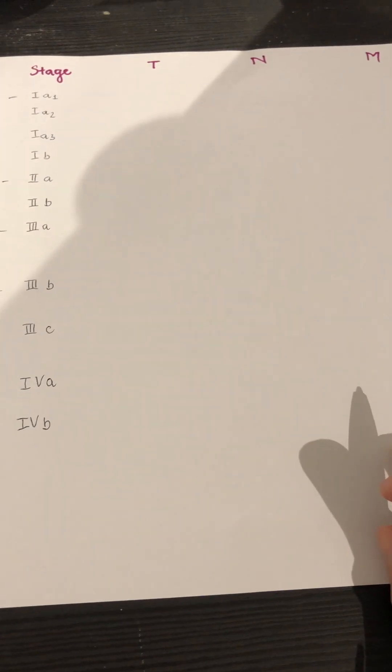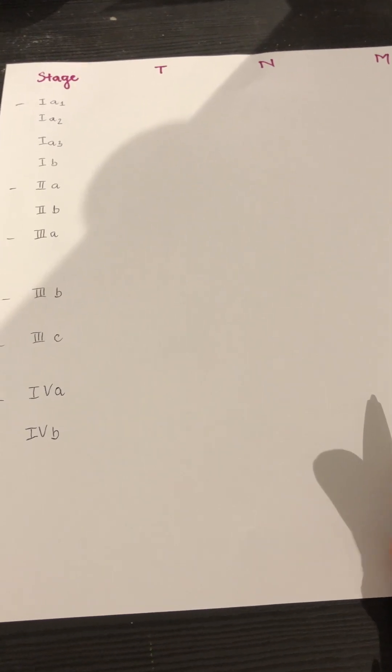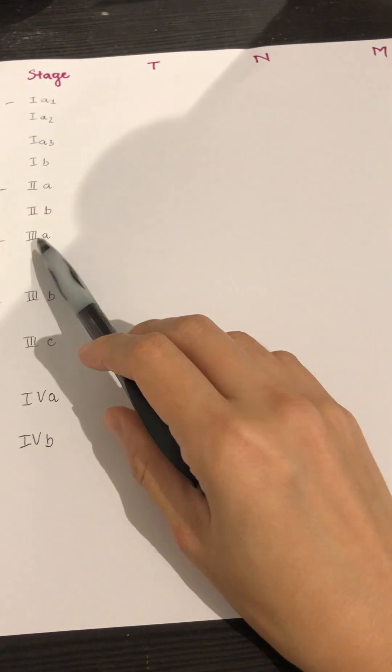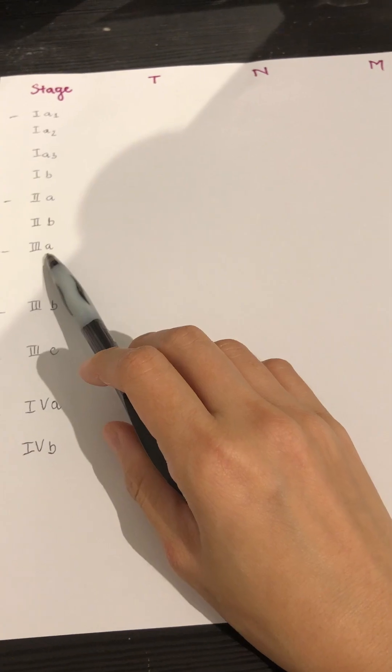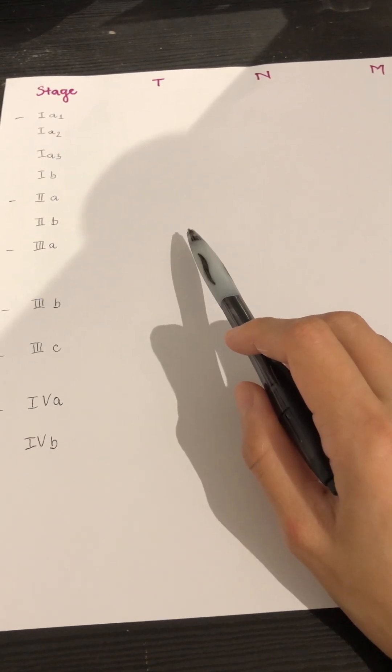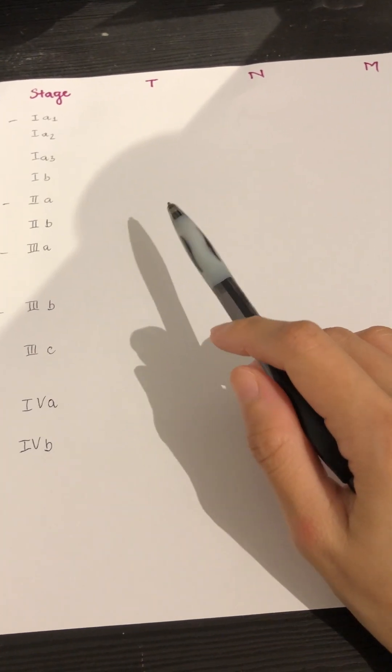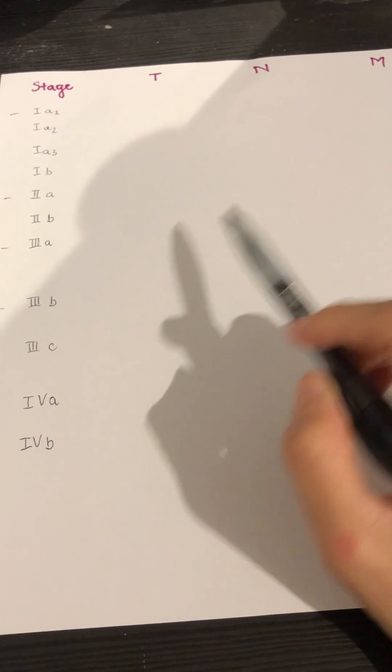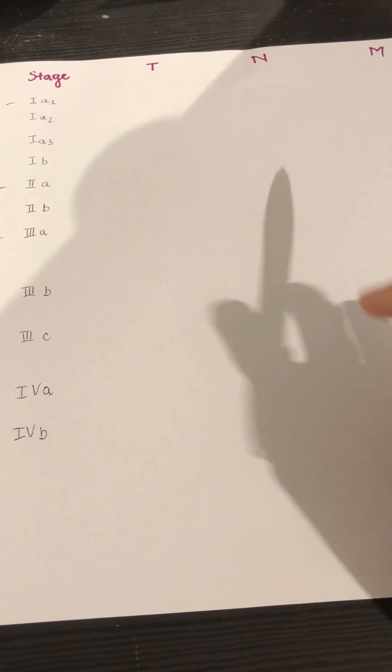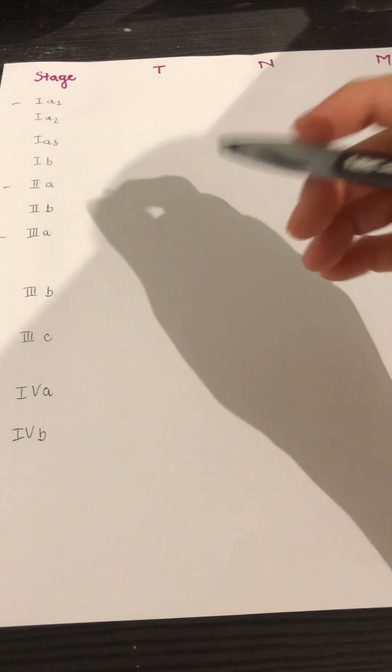So to memorize stages of lung cancer, just have to memorize a few things. First, you have to know that stage 3 will always have T stages T3 and T4. And second rule, when you go up on the stages, you always have to go up by T first and then you go up by the N stage second. So I'm going to show you how I do it.